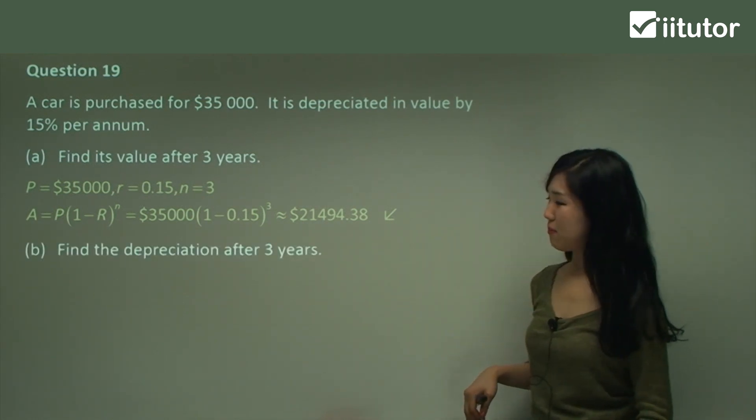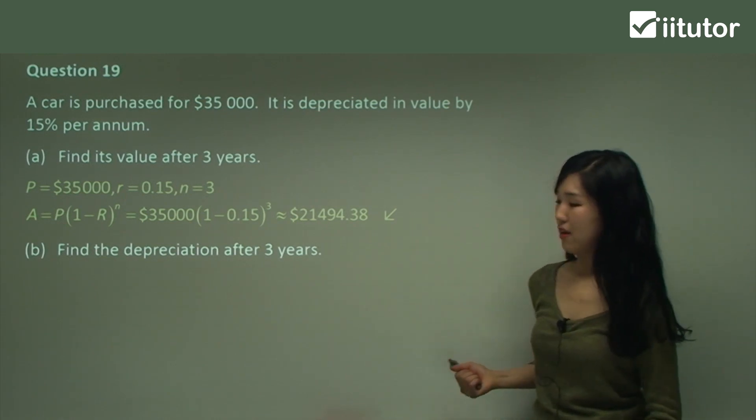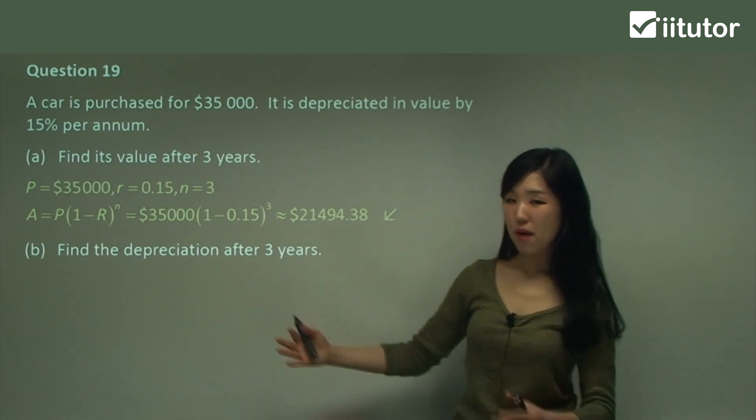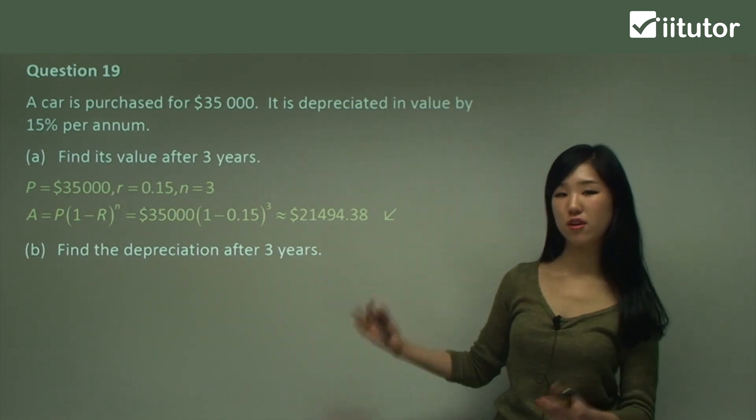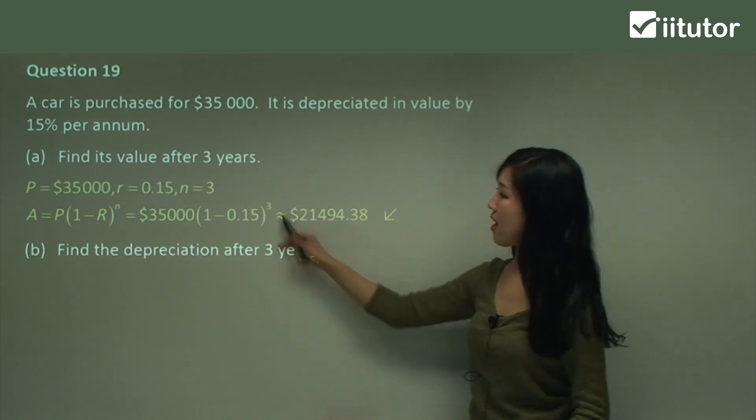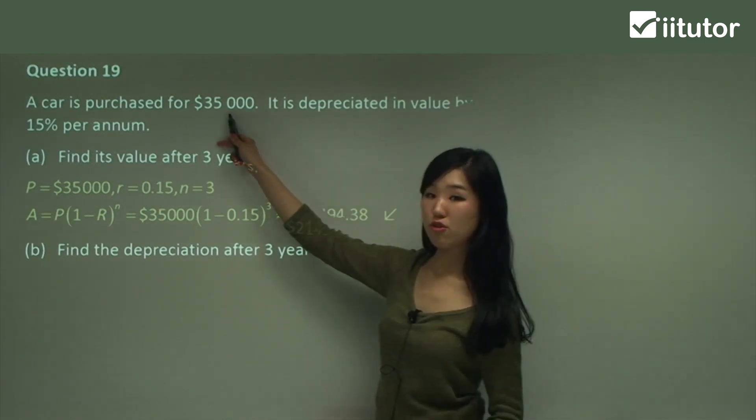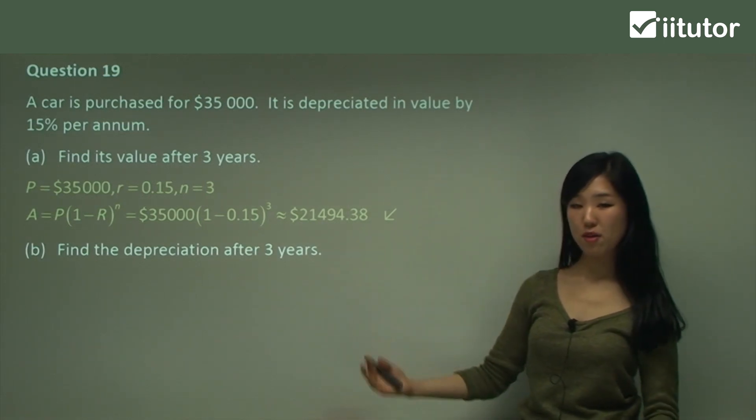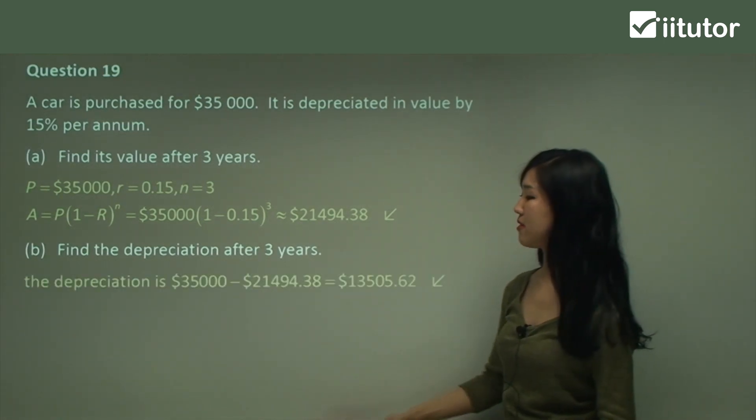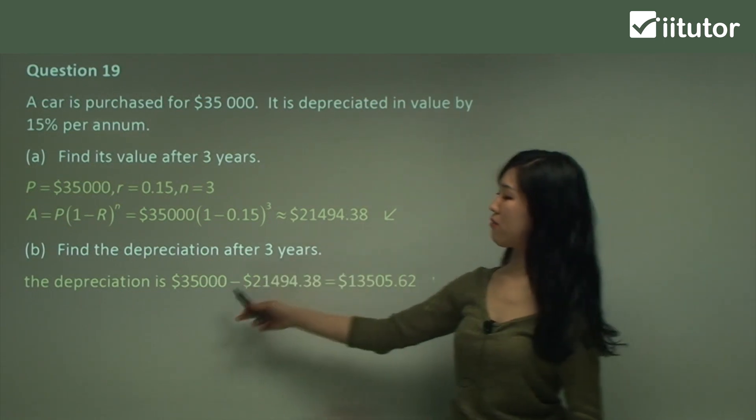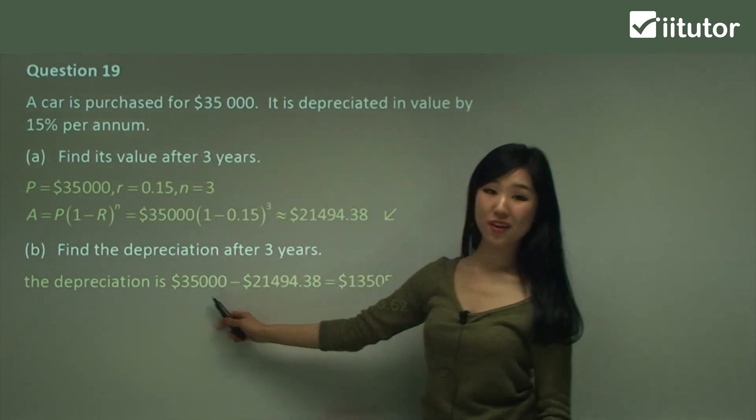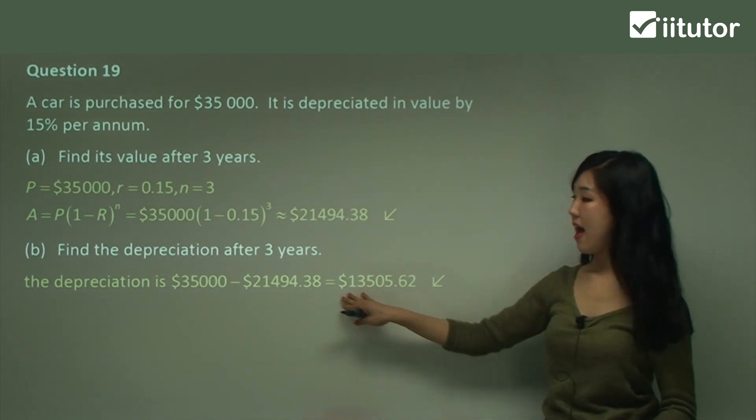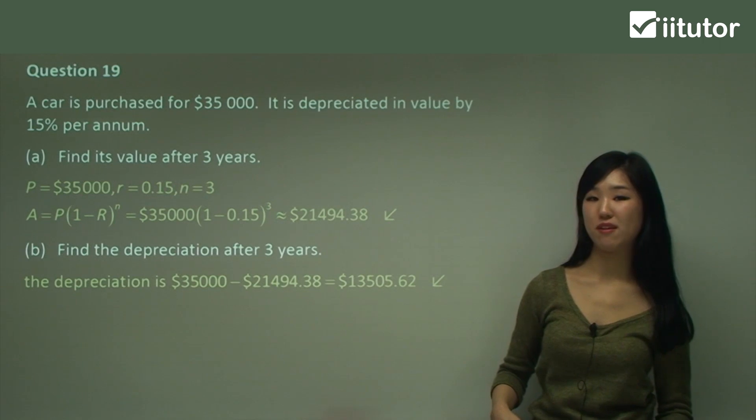Now that we've got that, let's go into part b. Find the depreciation after three years. So when it says find the depreciation, it's asking us how much did it depreciate by? How much did it decrease by? So this is the value after three years. This is the original value. As you can see, this is much less. So to find the difference or how much it decreased, we simply subtract that value from the original value. And that's how much it depreciated within the three-year period.